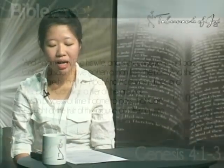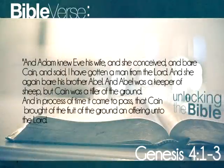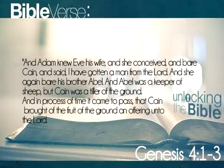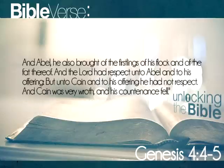Let's look at their story in Genesis chapter 4, verses 1 to 5. 'And Adam knew Eve his wife, and she conceived and bare Cain, and said, I have gotten a man from the Lord. And she again bare his brother Abel. And Abel was a keeper of sheep, but Cain was a tiller of the ground. And in process of time it came to pass, that Cain brought of the fruit of the ground an offering unto the Lord. And Abel, he also brought of the firstlings of his flock, and of the fat thereof. And the Lord had respect unto Abel and to his offering. But unto Cain and to his offering he had not respect. And Cain was very wroth, and his countenance fell.'